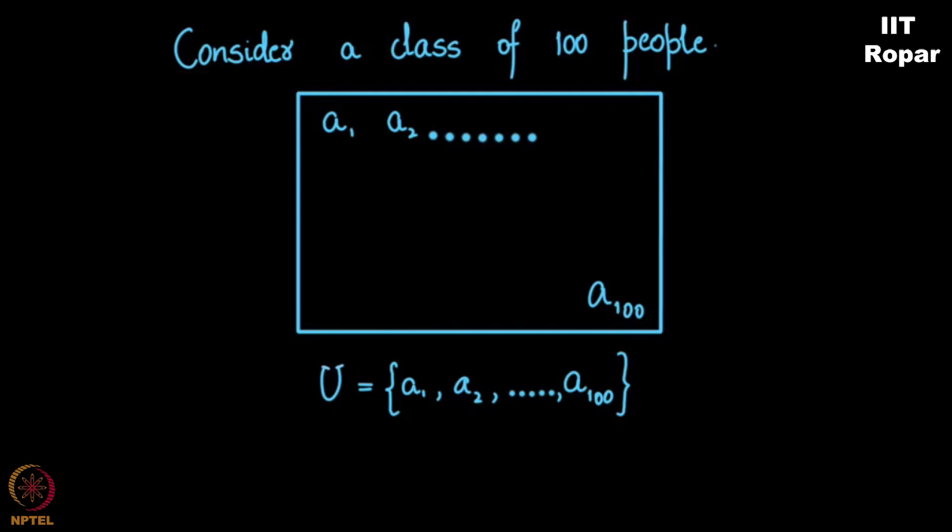Some of them, not necessarily A1, A2 up to A60, but some present. Let's say set P is a subset of U where P is some S1, S2 up to S60 of them are present.